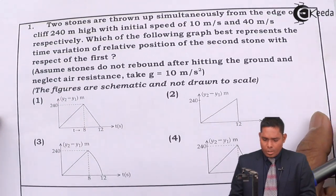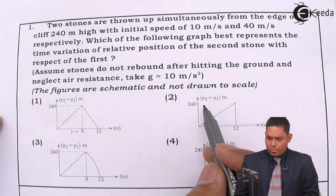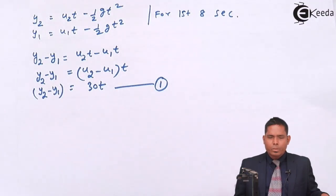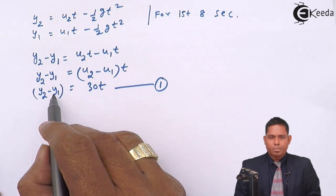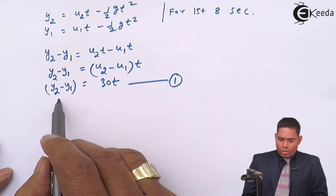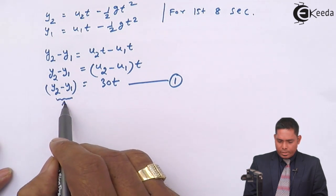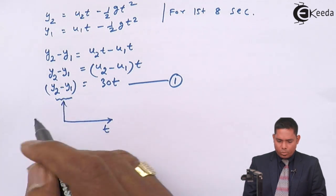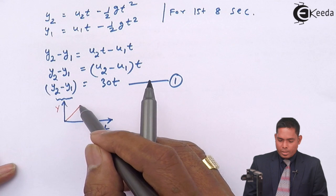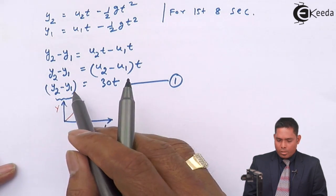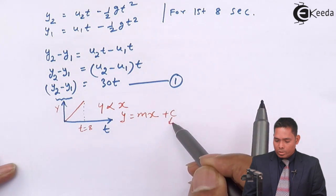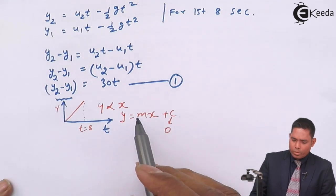If we plot y₂ − y₁ on the y-axis and t on the x-axis, the equation y₂ − y₁ = 30t is of the form y = mx with y-intercept zero. So the graph should pass through the origin and be a straight line until t = 8 seconds. Looking at the options, choices 1, 2, and 3 are all possibilities so far.